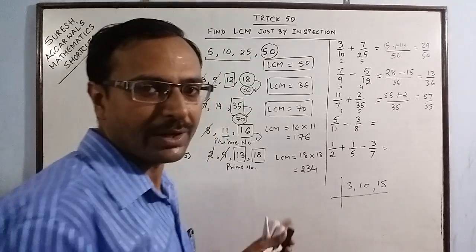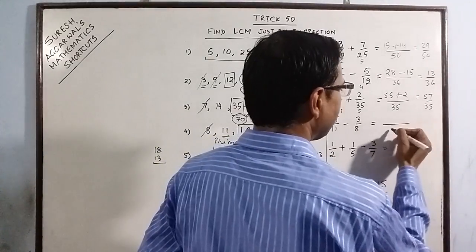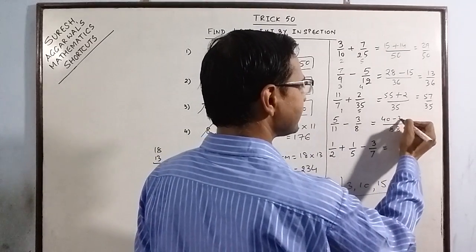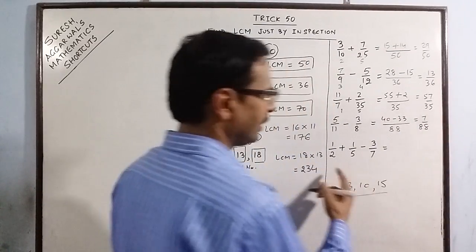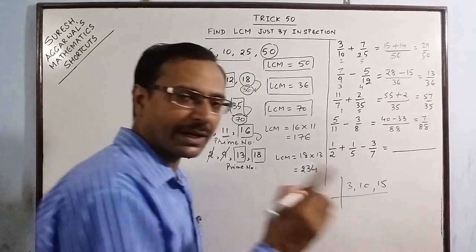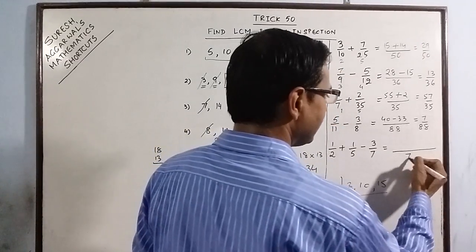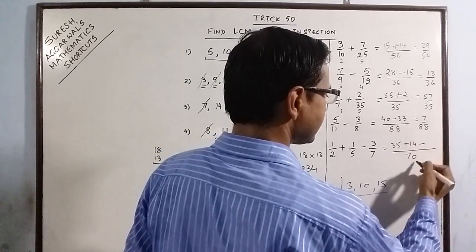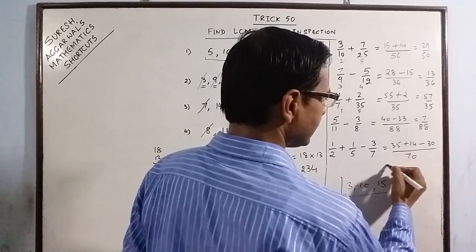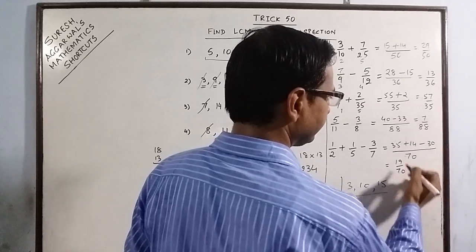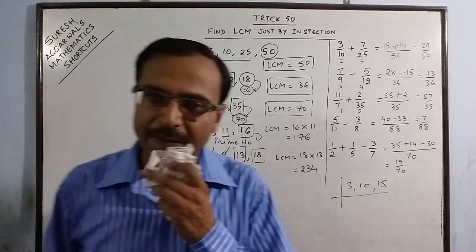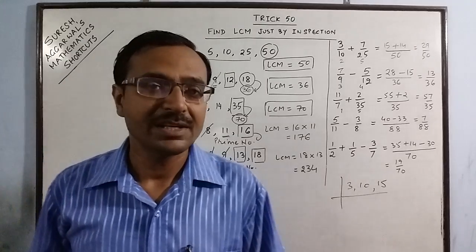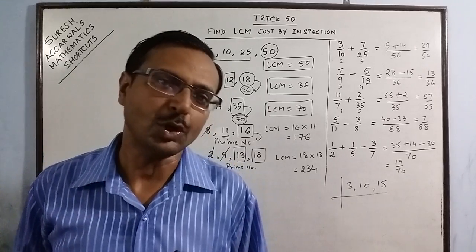When denominators are prime numbers like 11 and 8, since they don't divide each other, you can directly multiply them to get the LCM: 8 × 11 = 88, then cross multiply to get 40 − 33 = 7, giving 7/88. For prime denominators 2, 5, and 7, directly multiply: 2 × 5 × 7 = 70, giving 35 + 14 − 30 = 19/70. The concept of LCM helps us solve rational number problems much more easily.